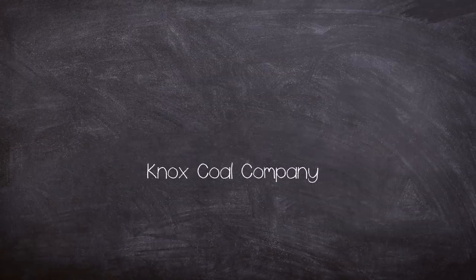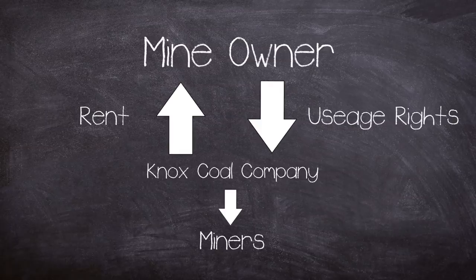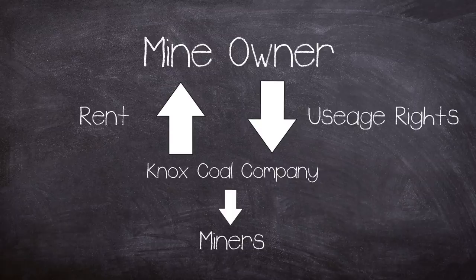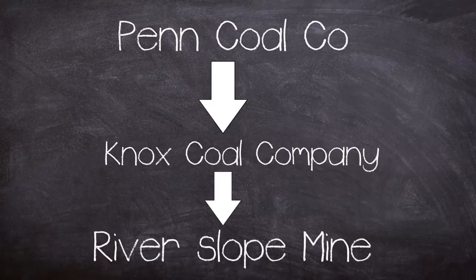The company was a contract mining operation. These organizations mined on behalf of the mine owner which allowed shall we say streamlining of operations. The Knox Coal Company had begun leasing the Riverslope mine from the Pennsylvania Coal Company in May 1954.